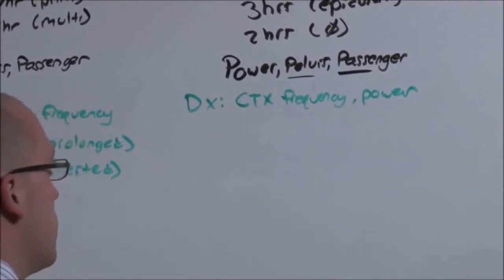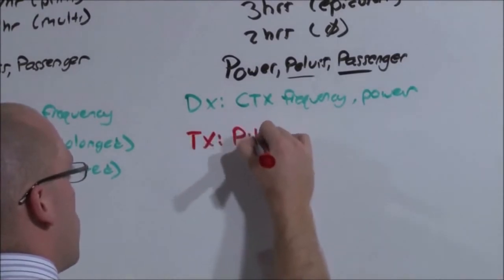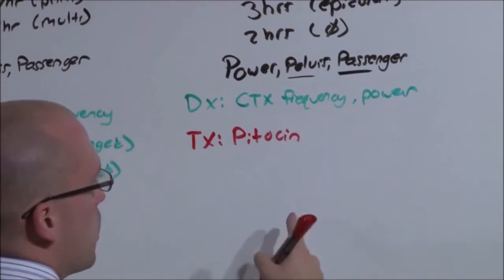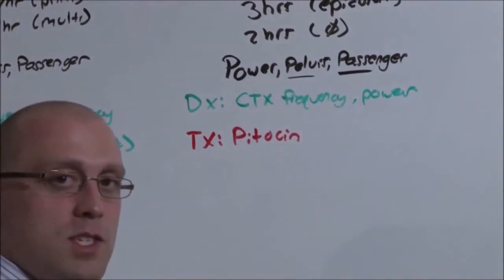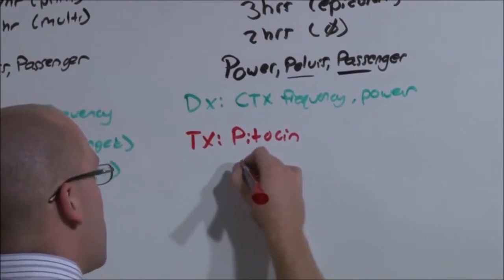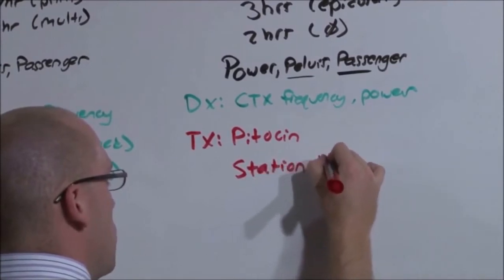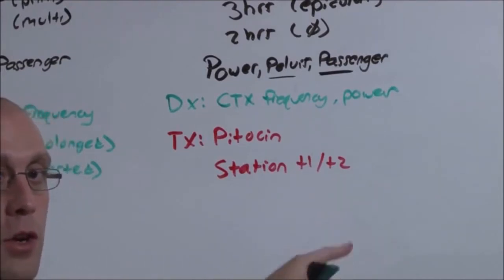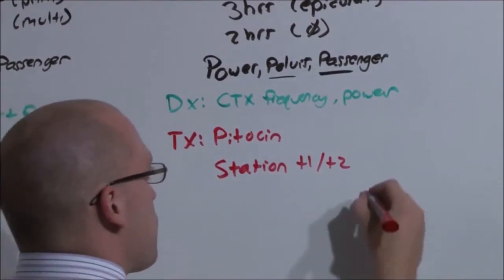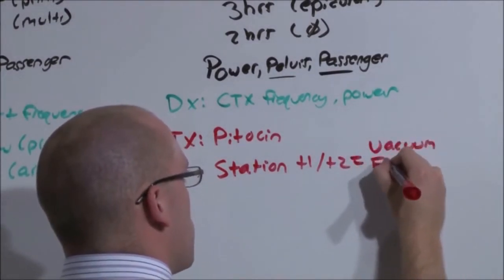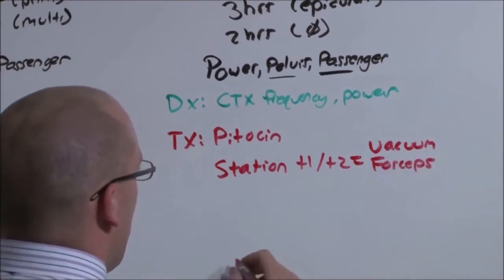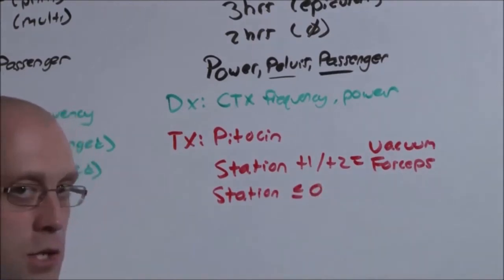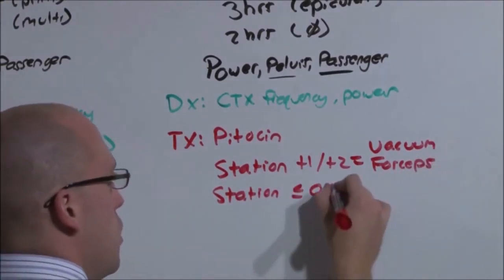And because the only thing we can augment is her power, we can try Pitocin. That is, if the contractions are infrequent and not powerful. But ultimately, if it's the pelvis or passenger, we're either going to have to assist baby or get it out somehow. So if you are at station one or two, that is plus one or plus two, you're so close to the end, you just can't get baby to go all the way. Now you're going to go into the vagina and help it come out. Do that with a vacuum device or forceps. On the other hand, if your station is zero or less, that is far from the vaginal opening, you cannot use vacuum or forceps. You'll have to go to C-section.